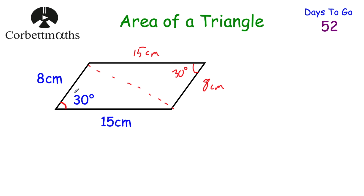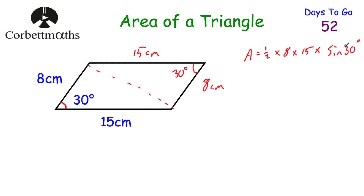Let's find the area of one triangle using half AB sine C. Area equals a half multiplied by A (which is 8), multiplied by B (which is 15), multiplied by the sine of 30. If you remember your exact trig values, the sine of 30 is a half (0.5). So you get a half times 8 times 15 times a half: half of 8 is 4, times 15 is 60, times a half is 30 — giving 30 centimetres squared. Or you can do it on a calculator: a half times 8 times 15 times sine of 30 also equals 30 centimetres squared.